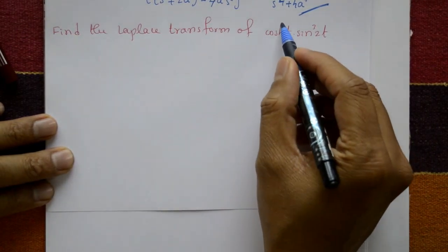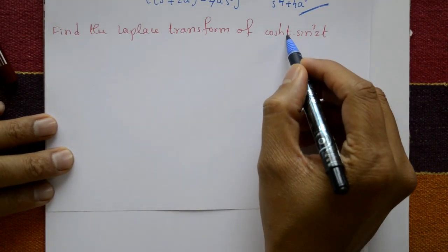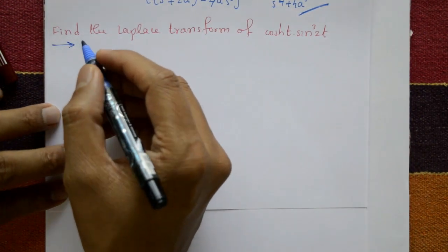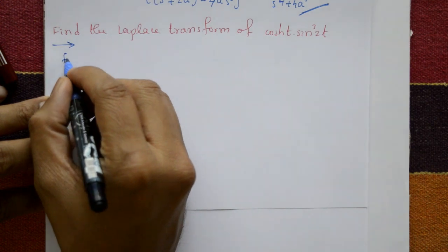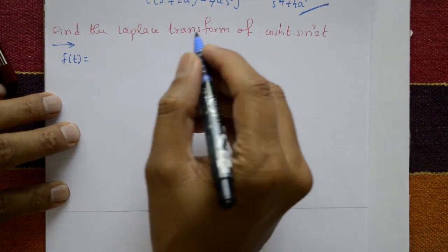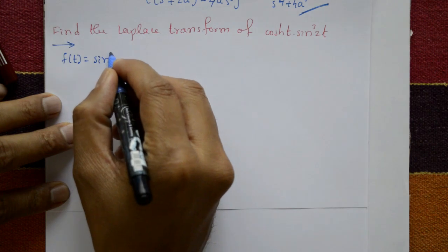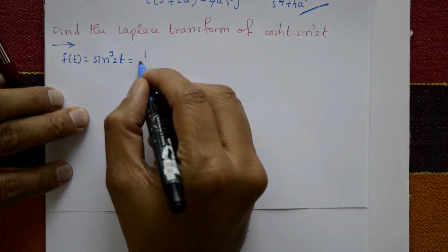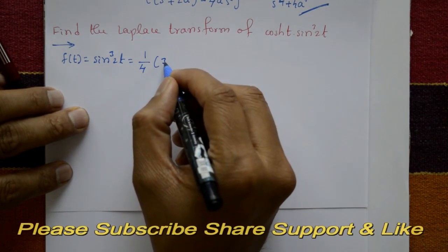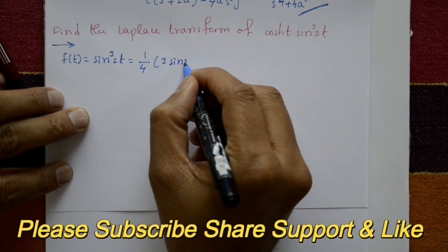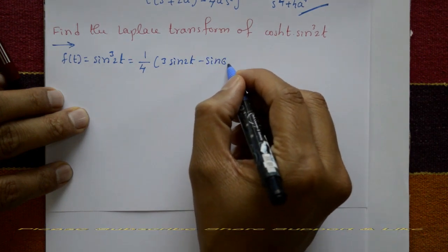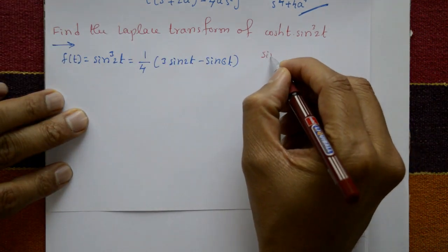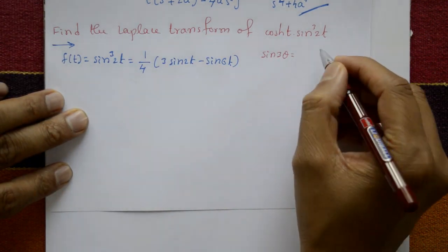Find the Laplace transform of the hyperbolic function cosh(t) multiplied by sin³(2t). For the solution, we take f(t) = sin³(2t), which equals 1/4 into 3sin(2t) minus sin(6t), using the trigonometric identity for sin³θ.